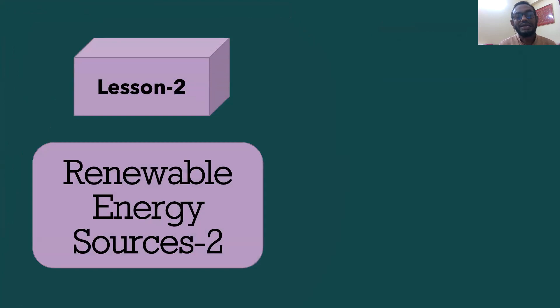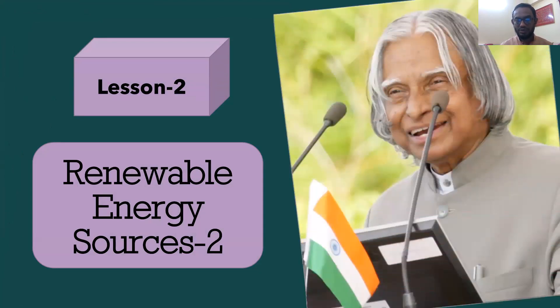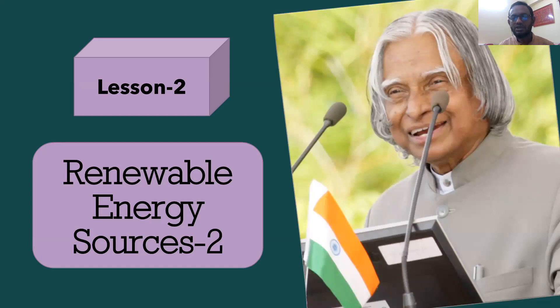Today's topic is taken from Unit 11, Lesson 2. The title of lesson 2 is 'Renewable Energy Resources 2.' Here is a picture. You can see a famous scientist of India. Can you mention his name? He is A.P.J. Abdul Kalam, the scientist of India and also the 11th president of India, our neighboring country. He is considered a philosopher of modern times.